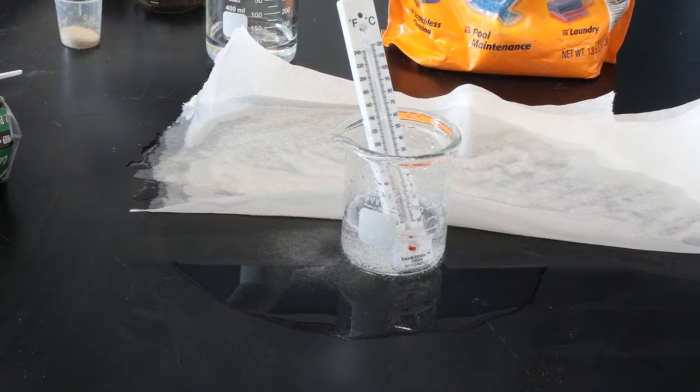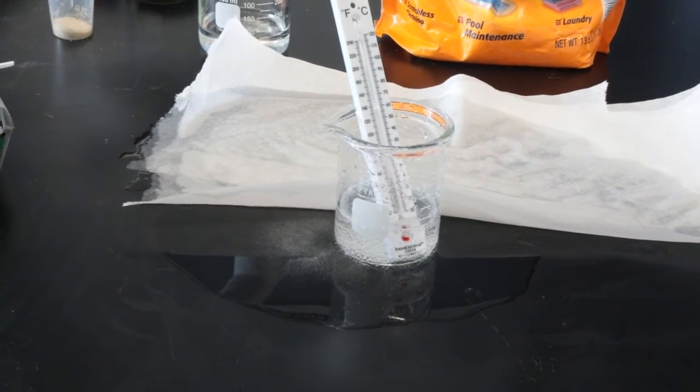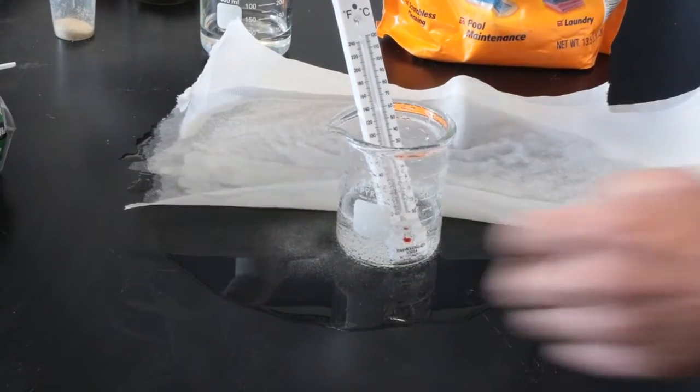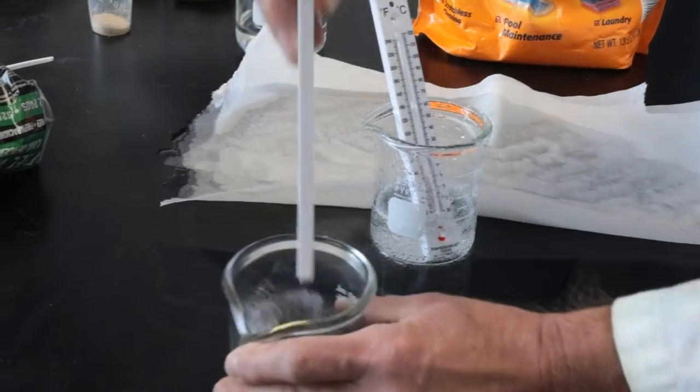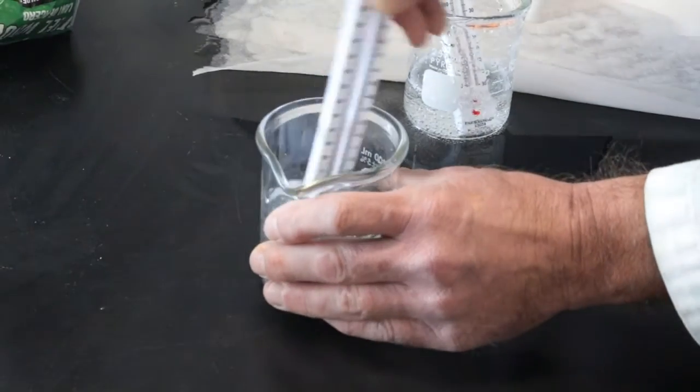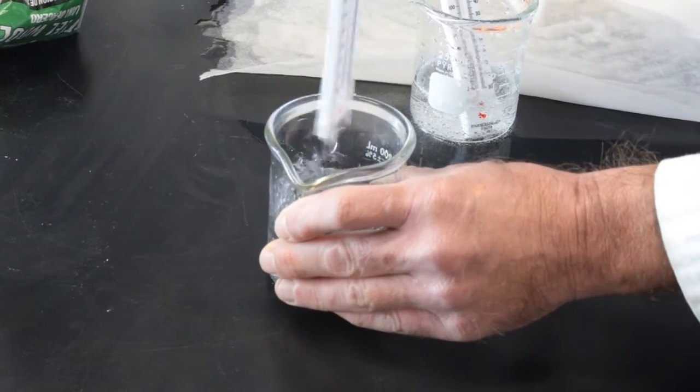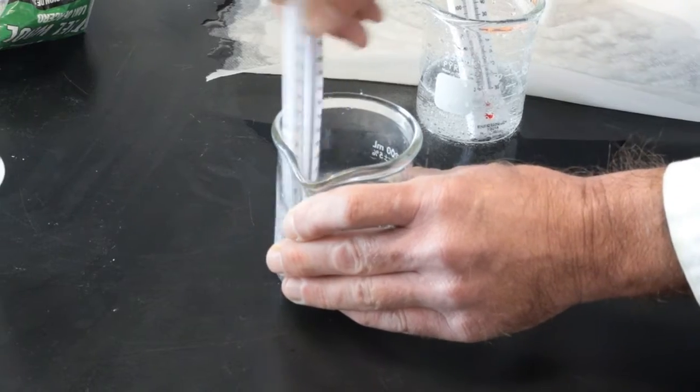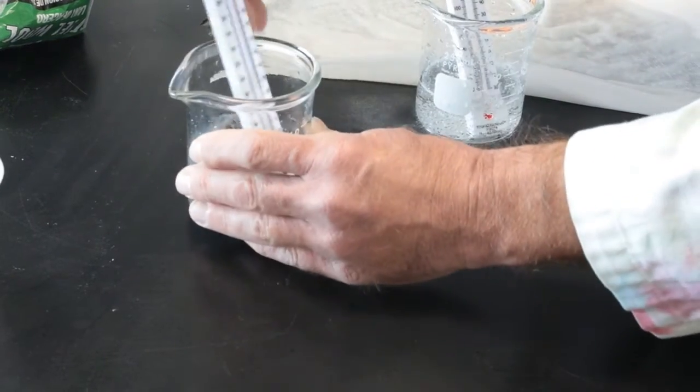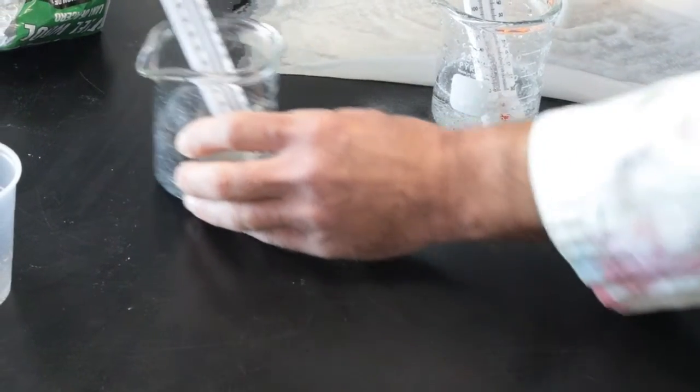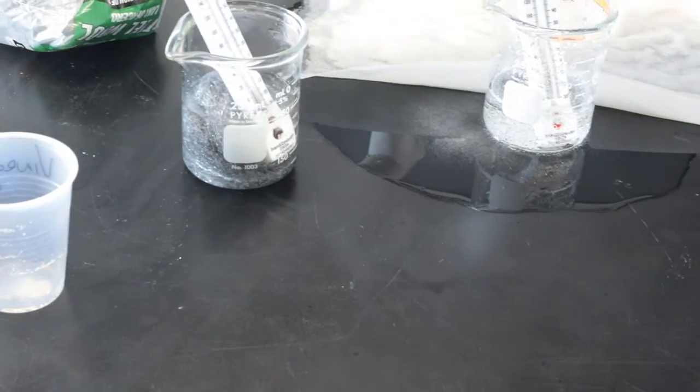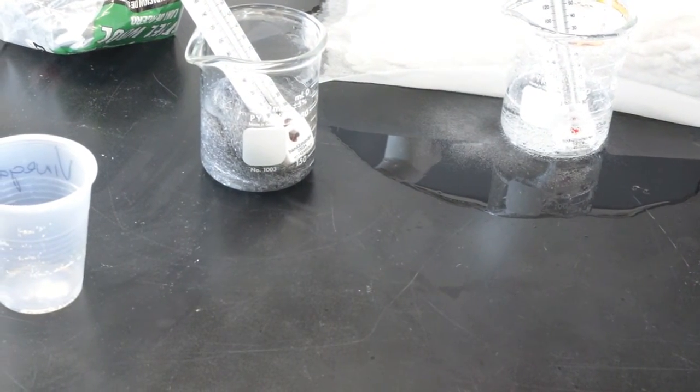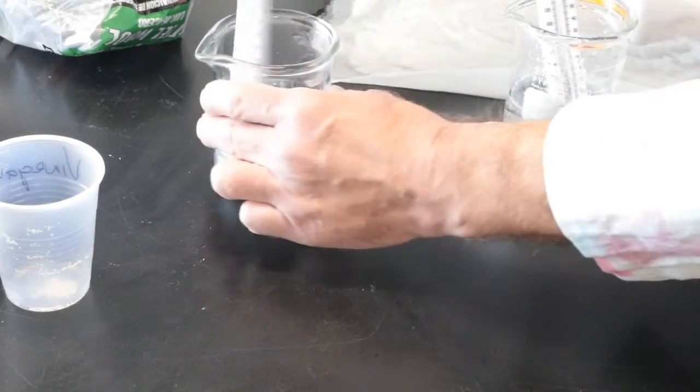While we're waiting for that, Dave, take the steel wool and swish it around with the thermometer. You can use steel wool, this plain, or you can use a Brillo pad. It seems to work the same amount. What we're doing is we're taking the oil off the steel wool using acetic acid to do that.